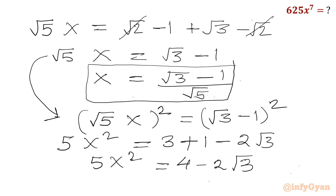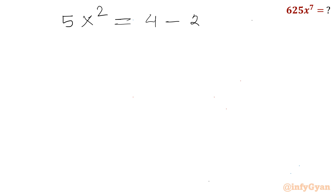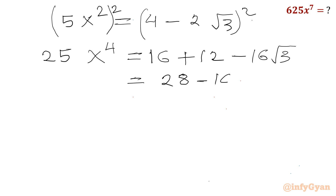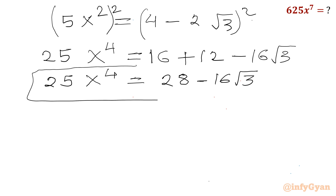Now I will consider squaring once again to get the x⁴ value. Starting from 5x² equals 4 minus 2·root 3, squaring both sides gives 25x⁴ equals (4 minus 2·root 3)², which expands as 4² plus (2·root 3)² minus 2·4·2·root 3, giving 16 plus 12 minus 16·root 3. So 25x⁴ equals 28 minus 16·root 3. Let me call this equation number 1.